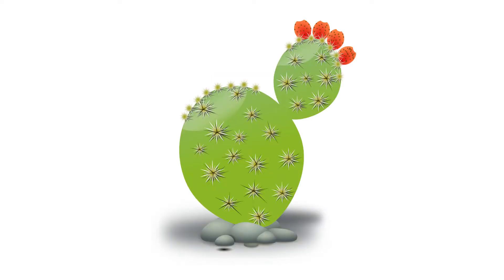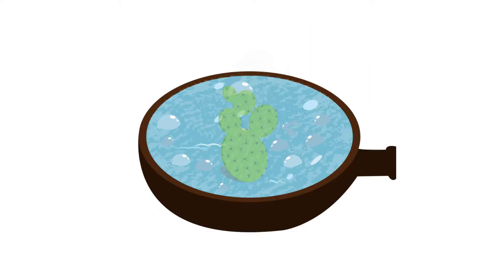The prickly pear cactus is safe to eat, both the pads and the fruit. But if you boil the pads in water and once they are soft, remove them from the water and rinse them in cold water.